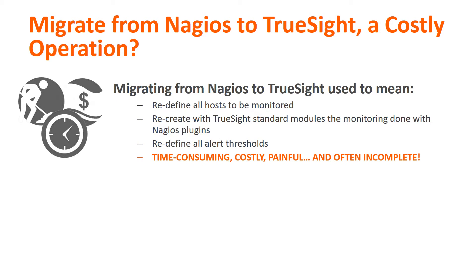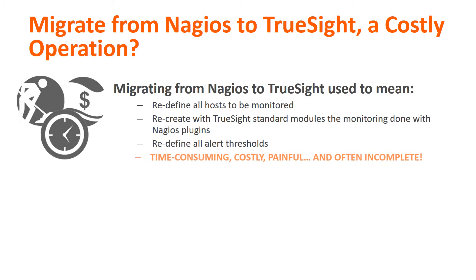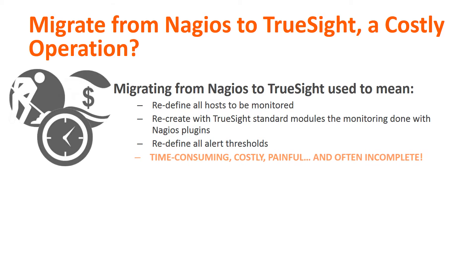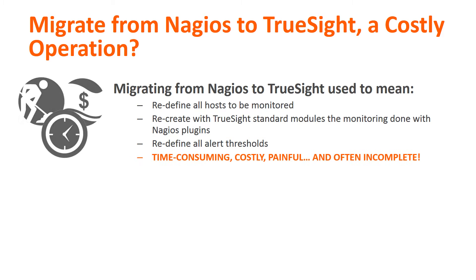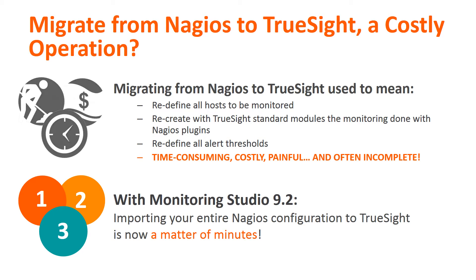Until now, migrating from Nagios to TruSight was a time-consuming, costly, and painful project that many organizations avoided because of the costs involved. With Version 9.2 of Monitoring Studio, the migration from Nagios to BMC TruSight Operations Management is now child's play.